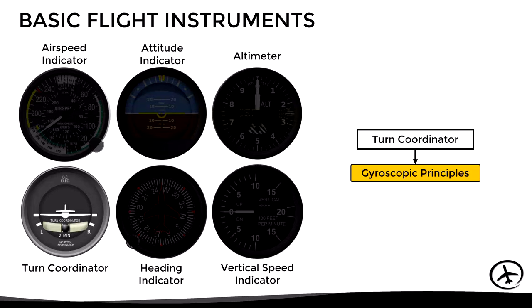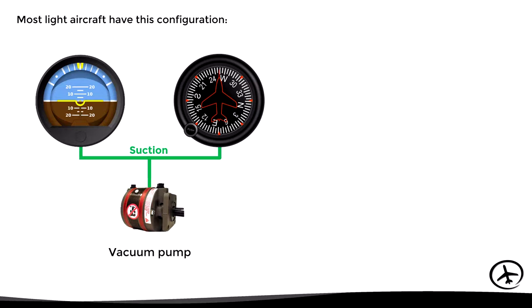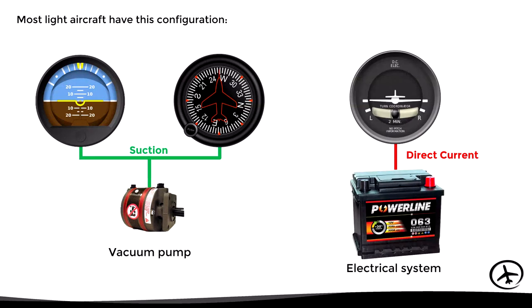As mentioned in the video about the gyroscopic system, most light aircraft have the following configuration: the vacuum pump provides suction to drive the gyros of the attitude indicator and the heading indicator, while the gyro of the turn coordinator is driven by direct current from the aircraft electrical system.